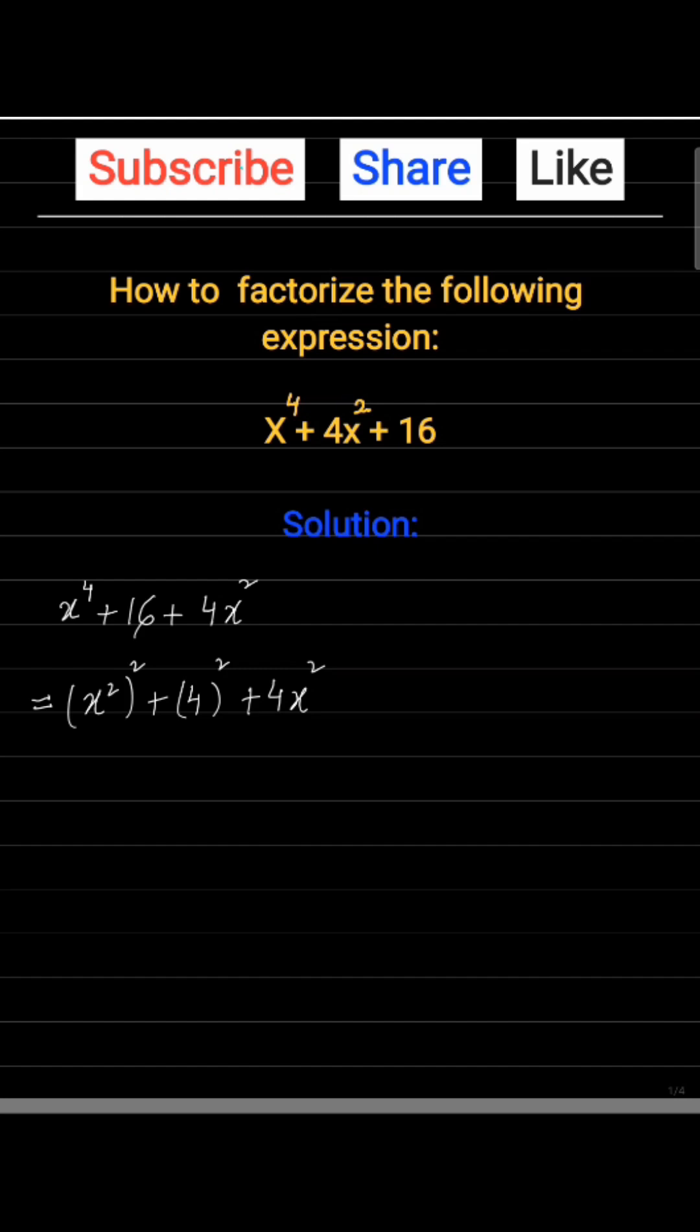By adding twice the product of x² and 4 and subtract the same so that the expression remains the same. (x²)² + 4² + 2(x²)(4) - 2(x²)(4) + 4x².